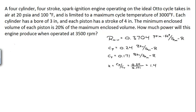In this problem we have a four-cylinder, four-stroke spark ignition gasoline engine, and let's assume that it's operating on an ideal Otto cycle. It's taking in air at 20 PSI and 100 degrees Fahrenheit. 20 PSI is a little bigger than standard atmosphere at 14.7, so there might be a turbocharger increasing the pressure. It's limited to a maximum cycle temperature of 3000 degrees Fahrenheit. Each cylinder has a bore of three inches and a stroke of four inches, and the minimum enclosed volume of each piston is only 20% of the maximum enclosed volume. The question is how much power this engine produces when operated at 3500 RPM, typical for cruising at highway speed.